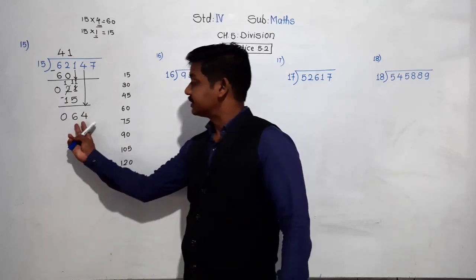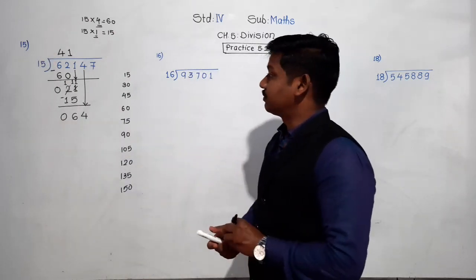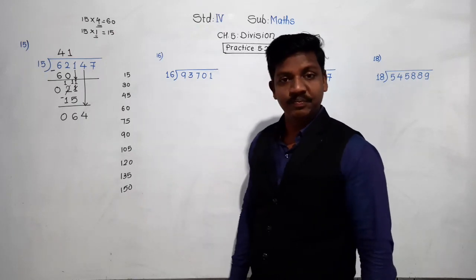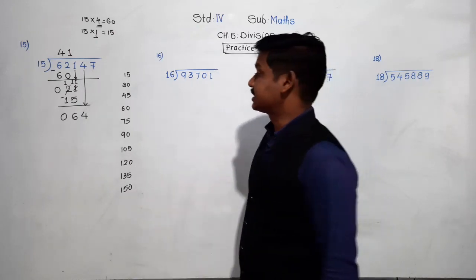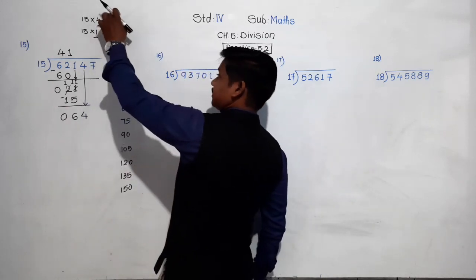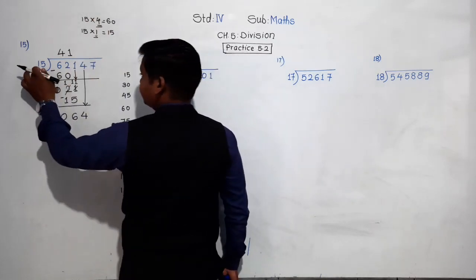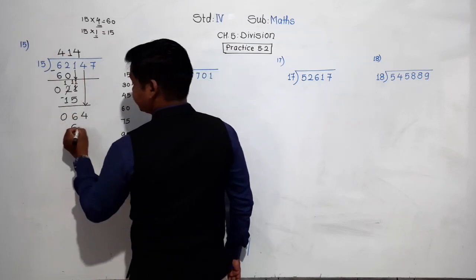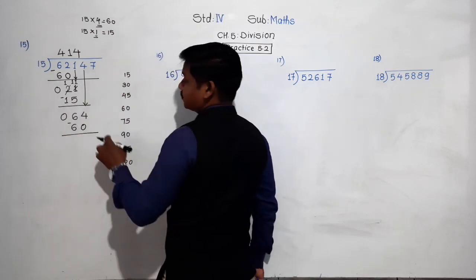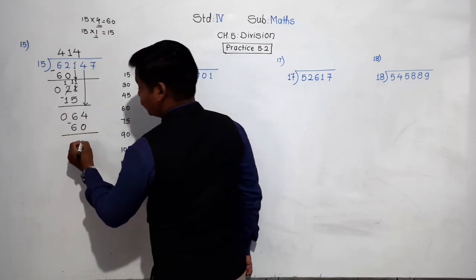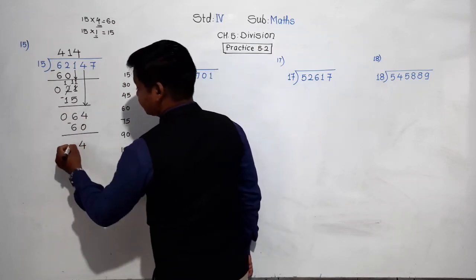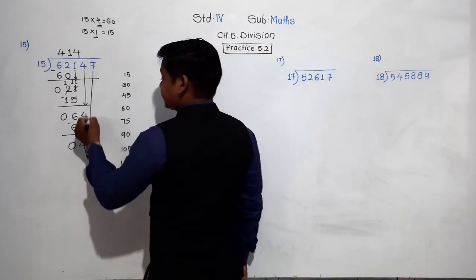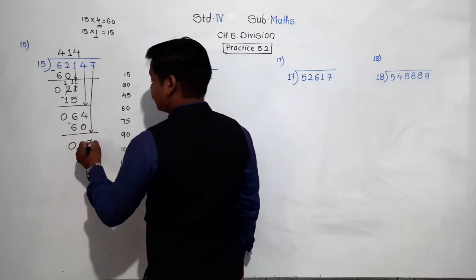Divide 64 by 15. 64 is not in the table of 15, so the smaller number than 64 in the table is 60 itself. 15 fours are 60. So 4 goes in the quotient. Subtract 60 from 64: 4 minus 0 is 4, and 6 minus 6 is 0. Next, bring digit 7 down — the number becomes 47.